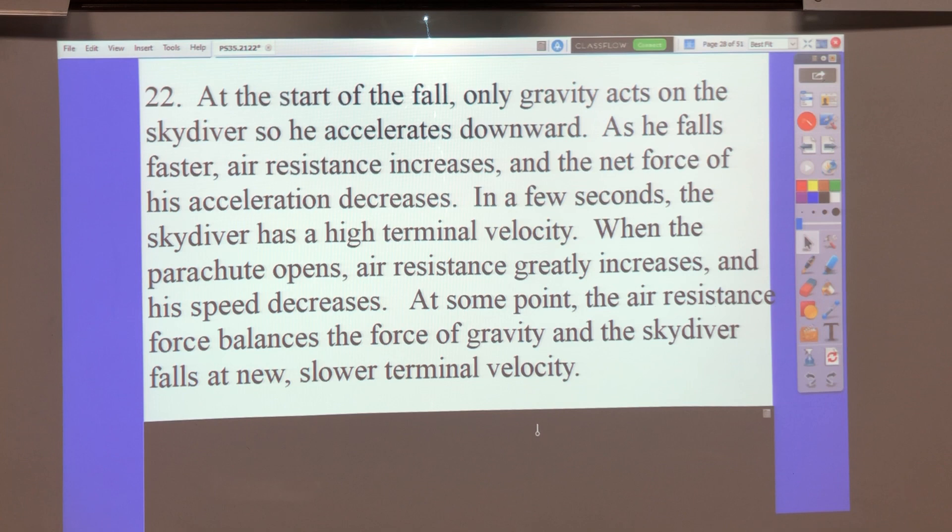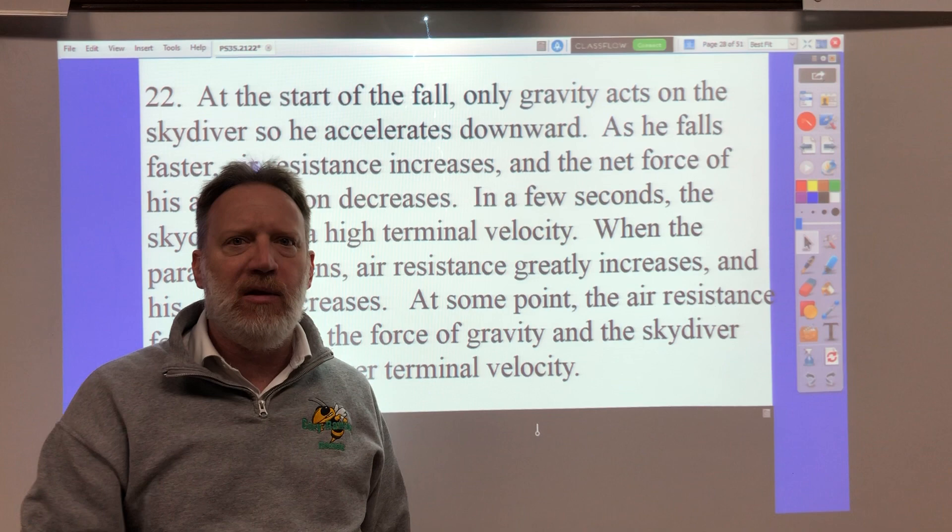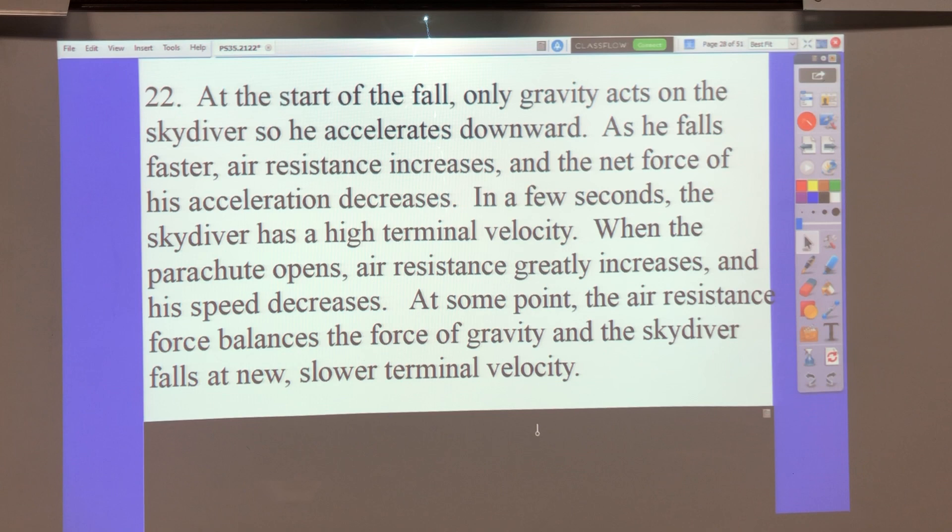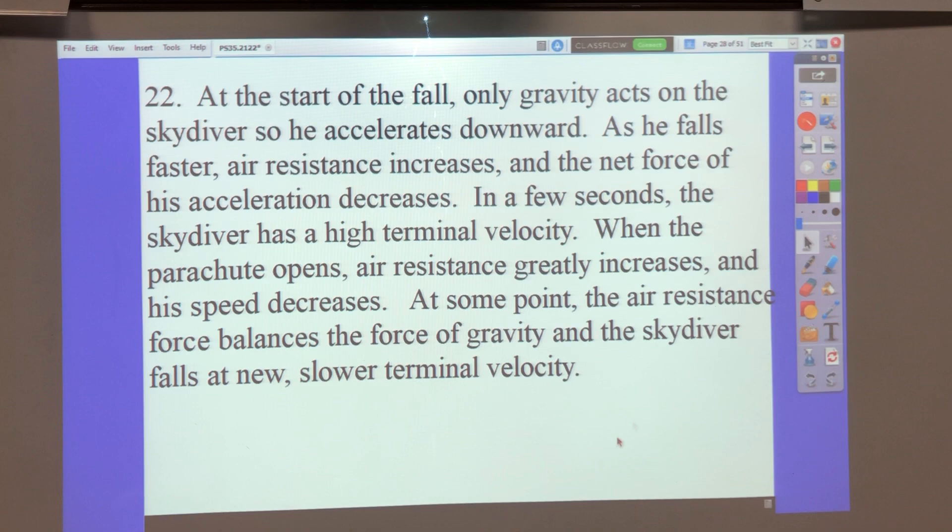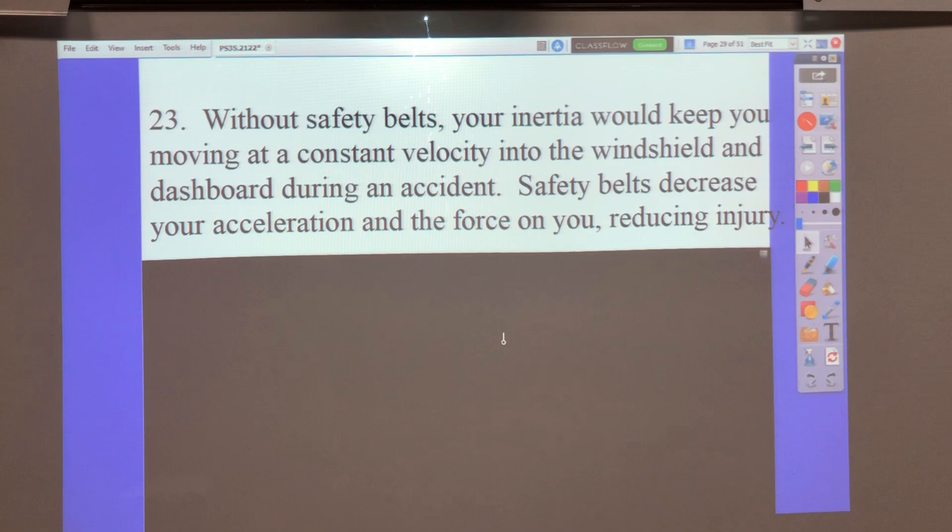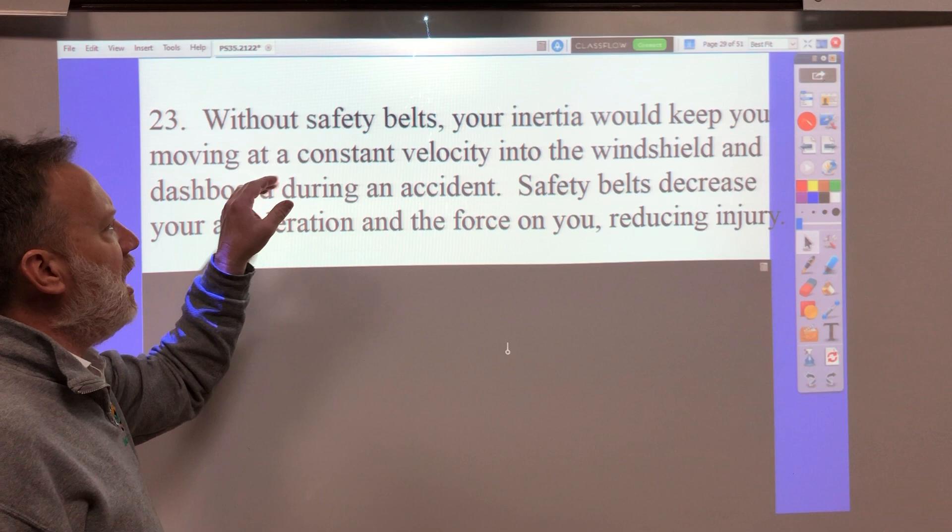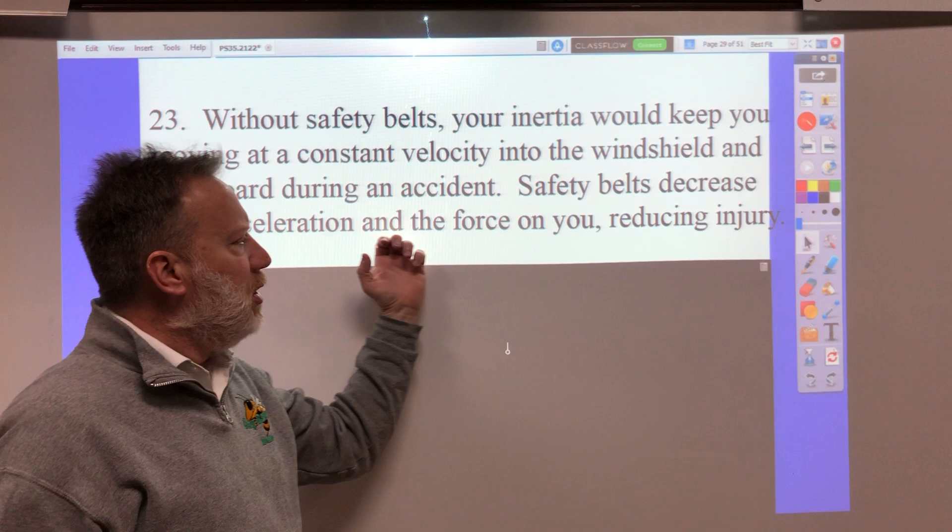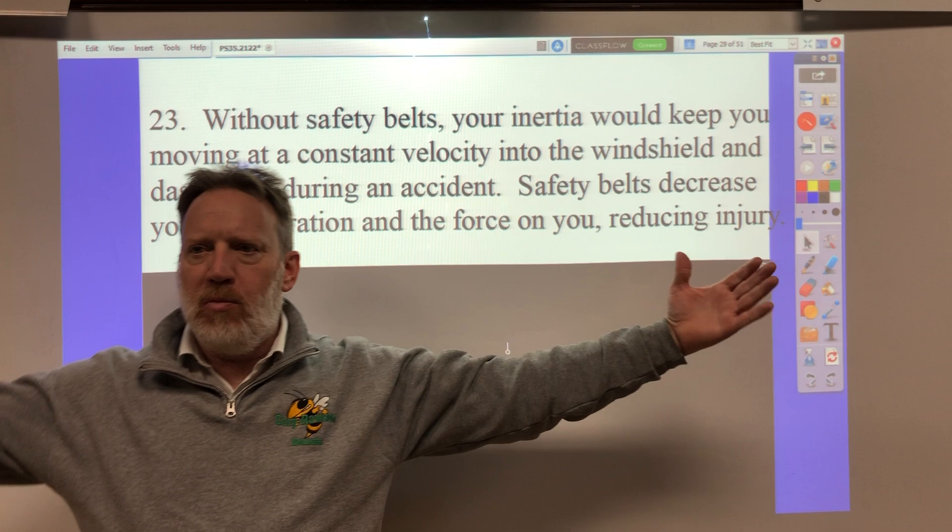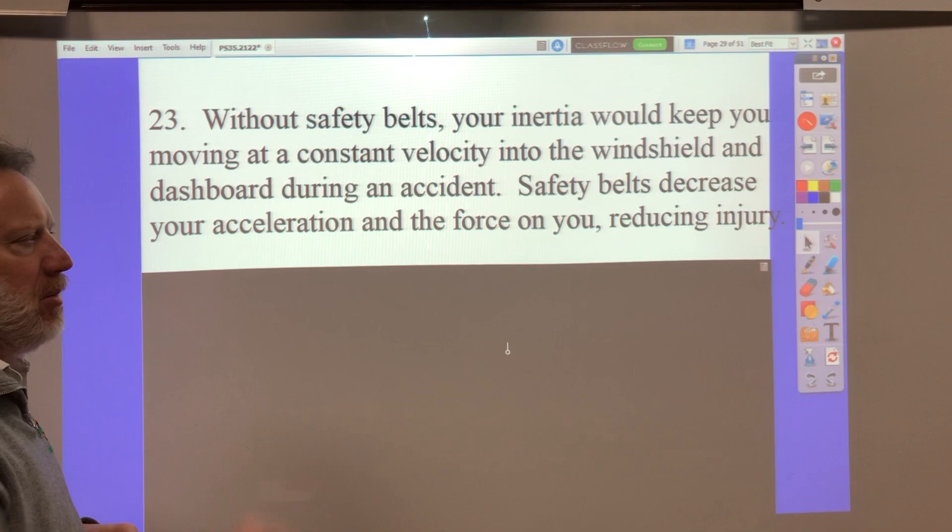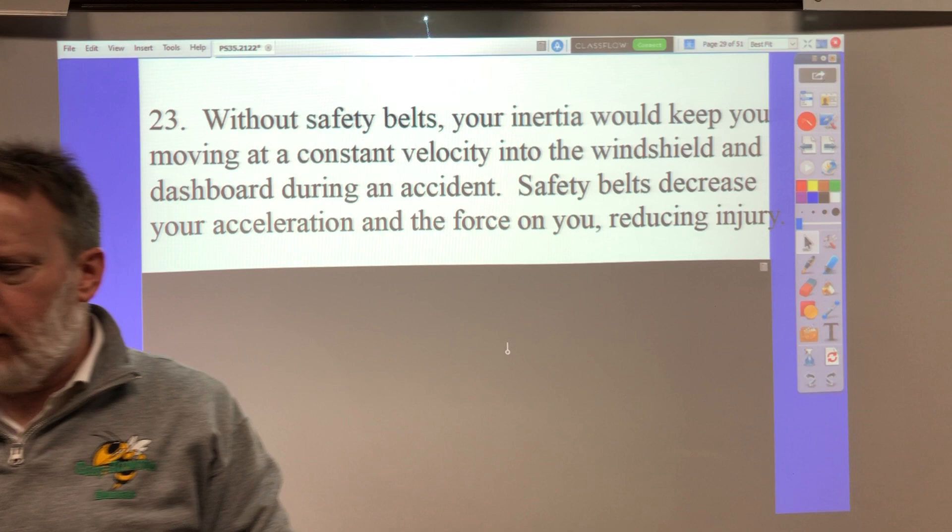Number 23 says, discuss the advantages of wearing a safety belt when riding in a vehicle. Rather than decelerating when you hit the objects in front of you in the dashboard and the windshield and the steering wheel, you will be slowed down with the car, which is a heavy acceleration, but it's not as bad. So without safety belts, your inertia keeps you moving at a constant velocity into the windshield and dashboard and steering column and steering wheel. Safety belts decrease your acceleration. They slow you down as the car crumples, so you do that deceleration over a few feet, which is much better than a couple of inches. And that really decreases the force on you, and it will really reduce your injury.